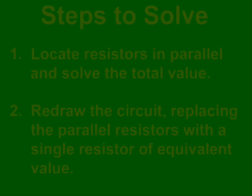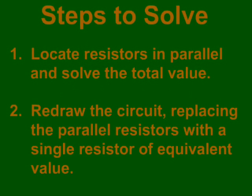The first step to solving a resistor network is to locate the parallel resistances and find the equivalent resistance. Next, you need to redraw the circuit removing the parallel resistors and replacing them with a single equivalent resistor.